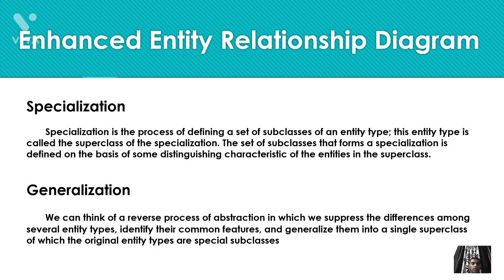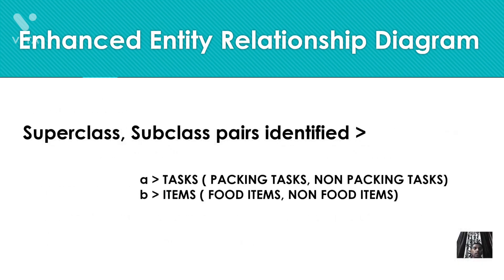Enhanced Entity Relationship (EER) diagrams are advanced database diagrams very similar to regular ER diagrams. As the complexity of data increases, we need a more enhanced version of ER to represent data more efficiently. In EER, we display subclasses and superclasses. Two ways of doing this are specialization and generalization. In specialization, we divide classes into subclasses where each subclass inherits the attributes of the superclass and can also have its own attributes. Generalization is the opposite — we categorize various subclasses with common attributes into one superclass.